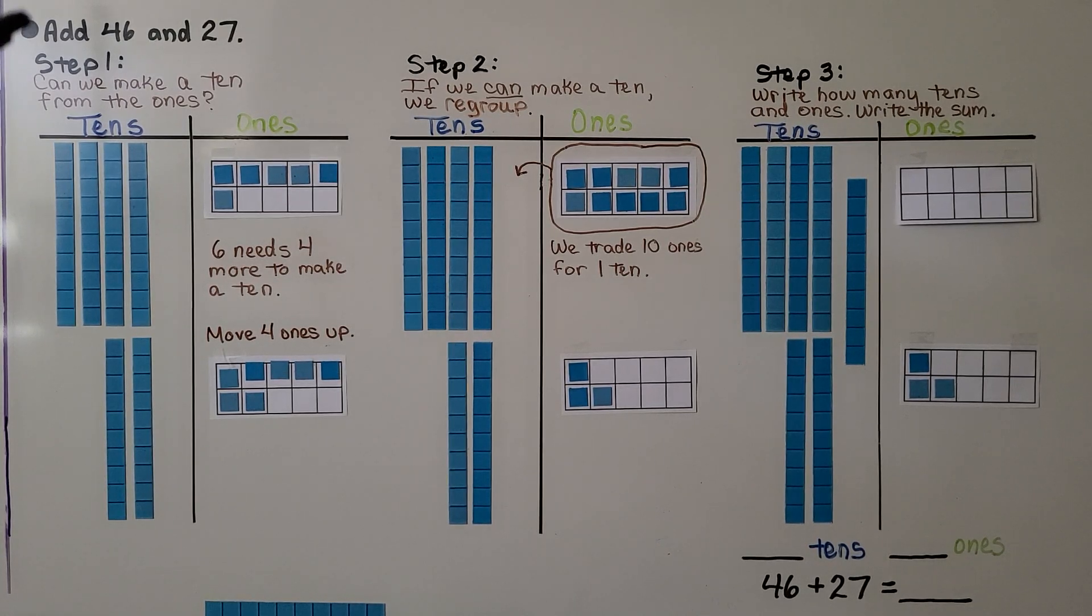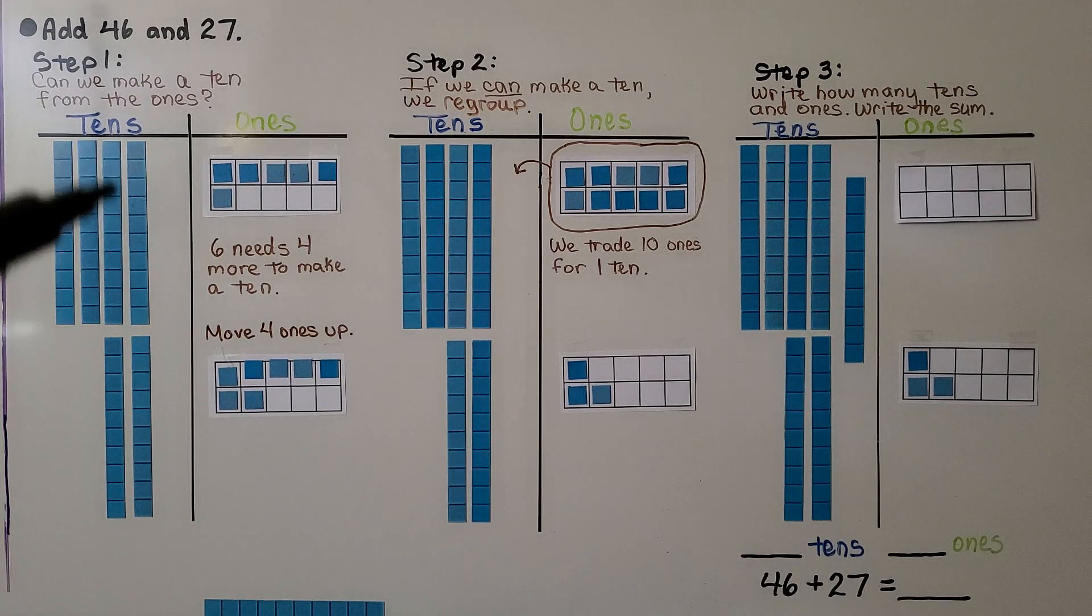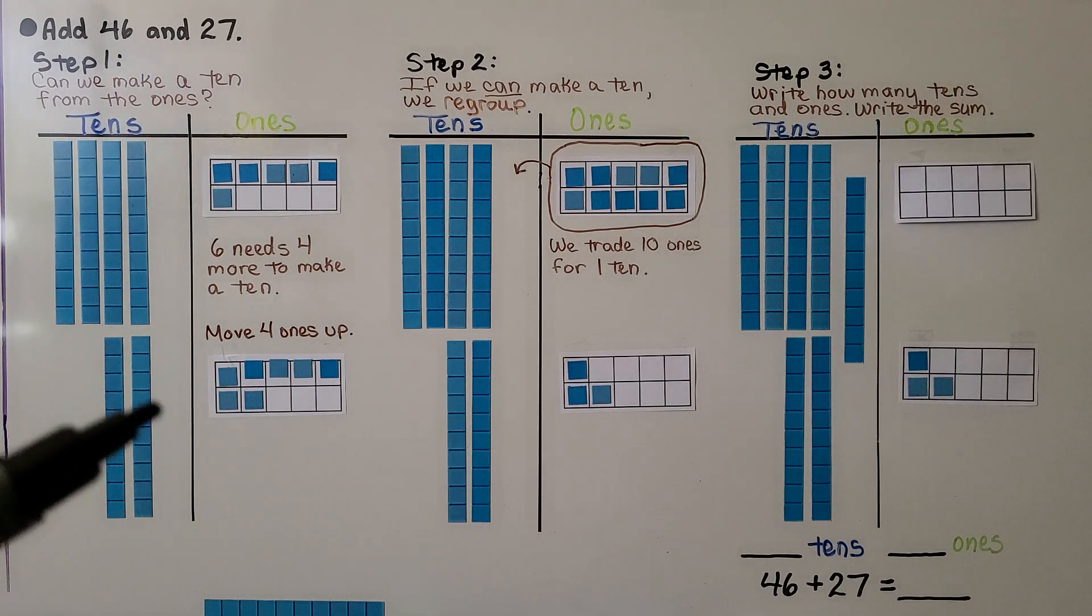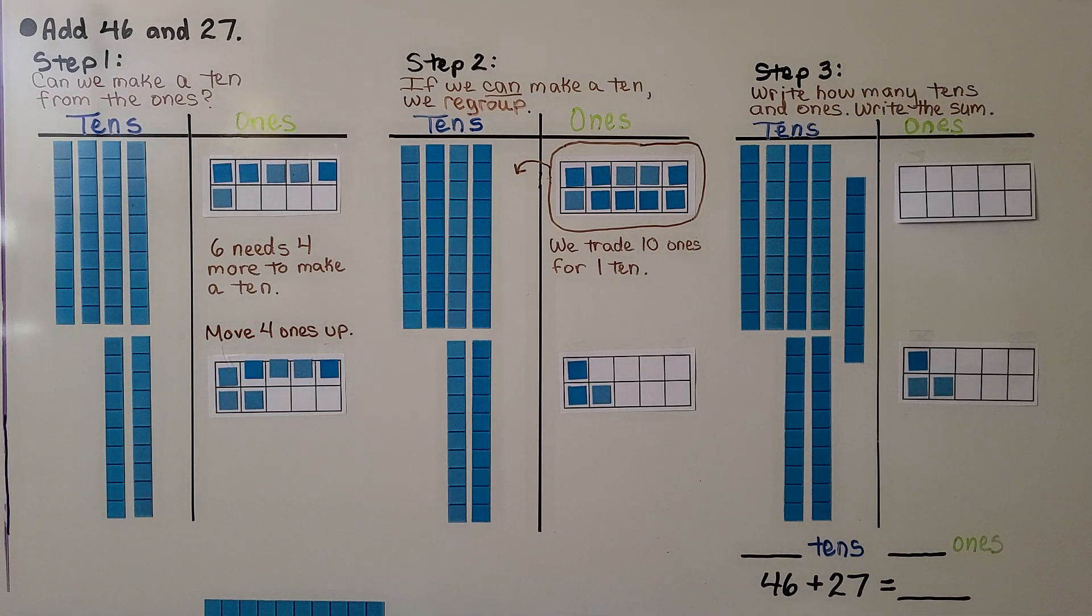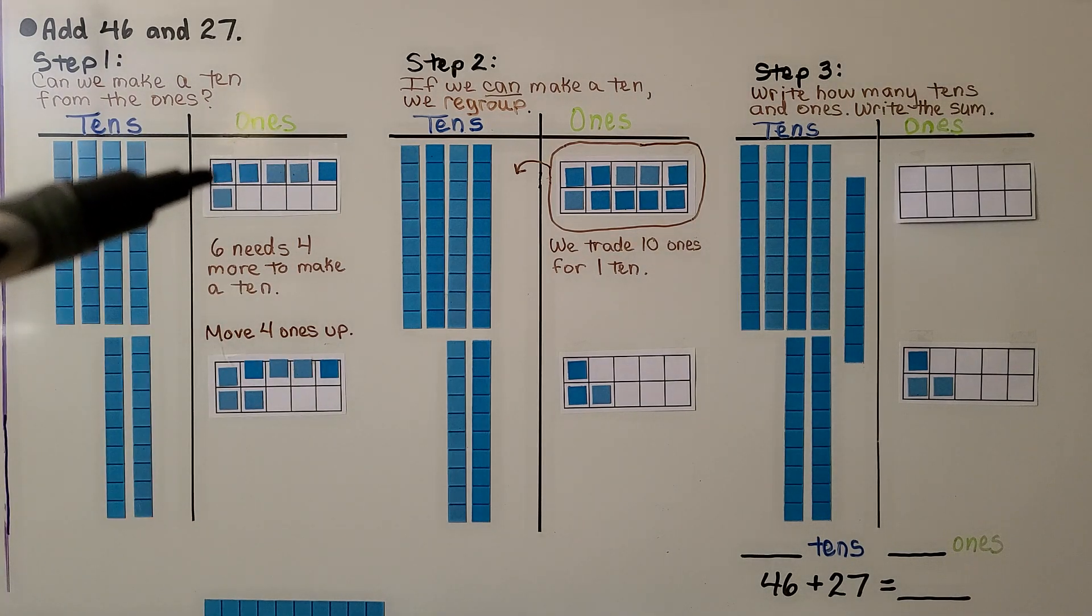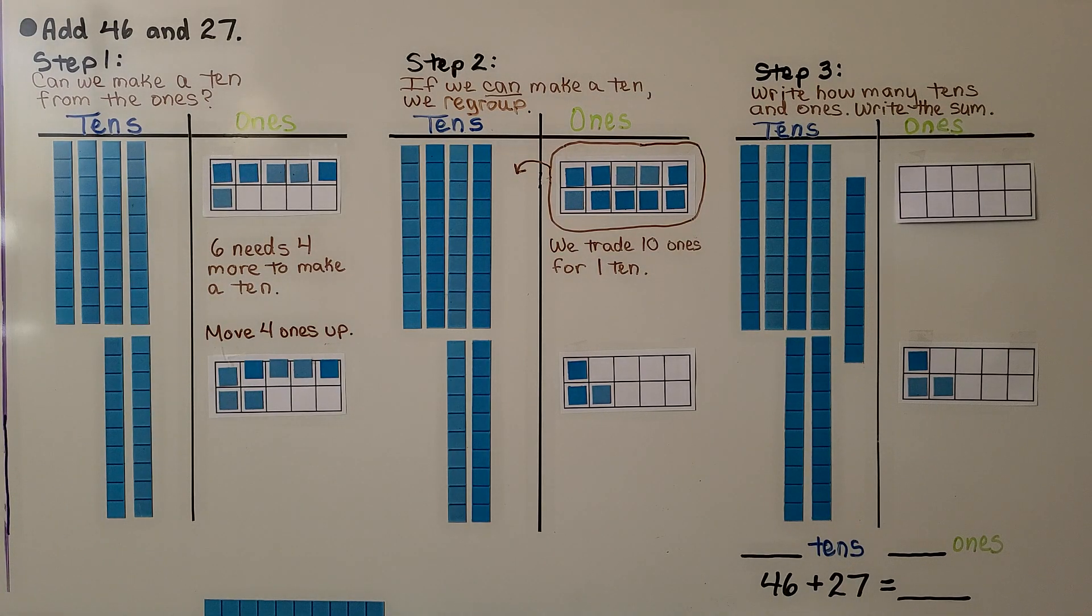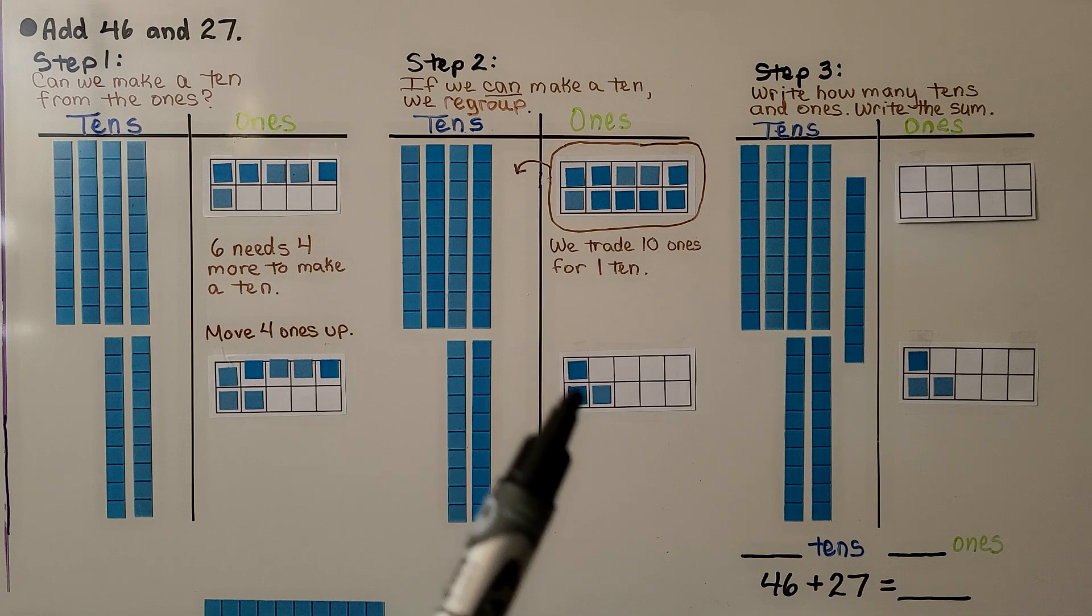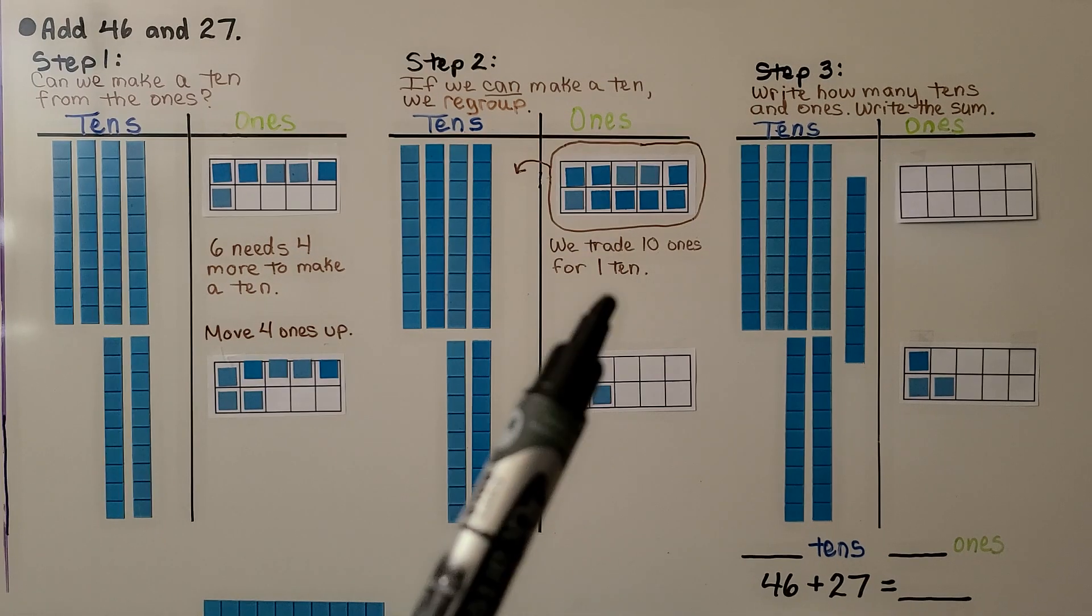Now if you look over here, it says we need to add forty-six and twenty-seven. Step one is, we have four tens, six ones for forty-six. We have two tens, seven ones for twenty-seven. We think, can we make a ten from the ones? This six needs four more to make a ten. We can move four of these up to here.